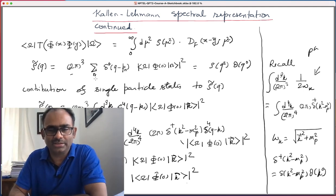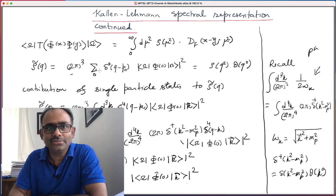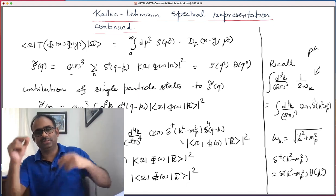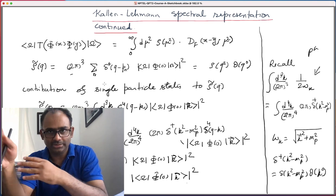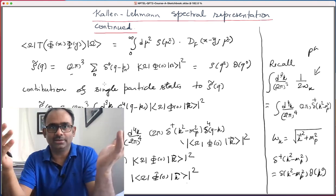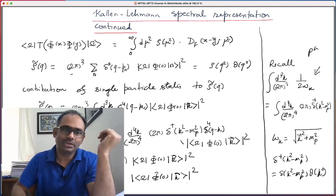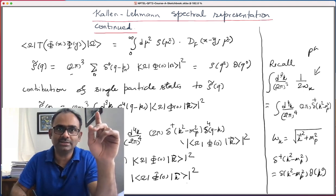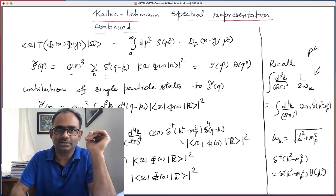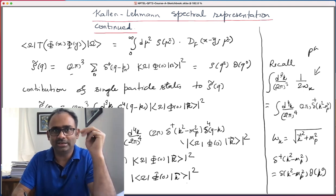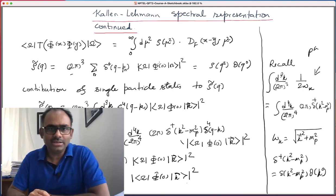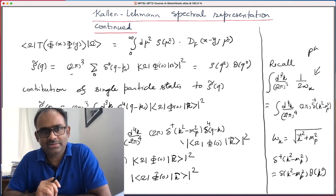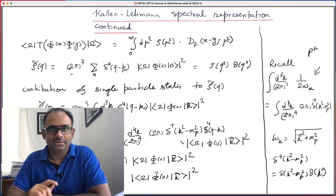When you look at multi-particle states, say a two-particle state with individual momenta k₁ and k₂, you still have four delta functions but now you integrate over d³k₁ and d³k₂ — a six-dimensional integral. The four delta functions get used up and you are still left with a two-dimensional integral. So there is no way you are going to get a contribution to ρ(q²) from two-particle states that is proportional to a delta function. That is not going to happen because of this counting: six integrals, four delta functions, leaving two remaining.